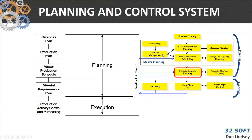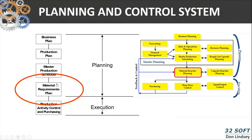If you remember from last session on the 13th, we talked about this ERP closed loop system. Well, today we're going to concentrate primarily on MRP. The closed loop system starts at the top with business planning, that feeds down into production planning and master scheduling. We'll talk about how that feeds into material requirements planning...